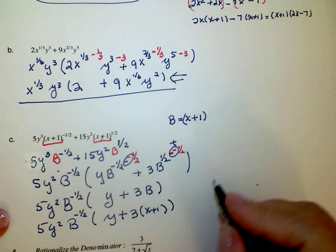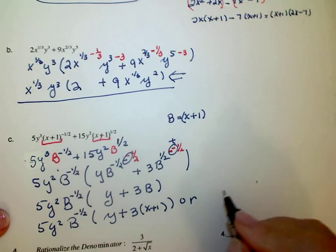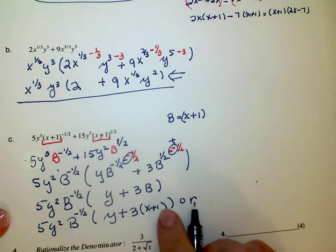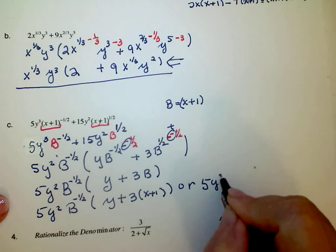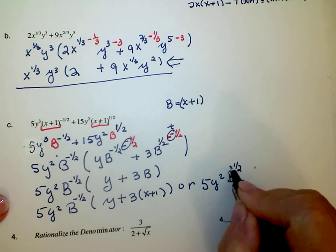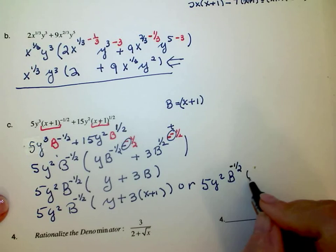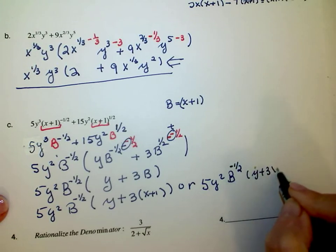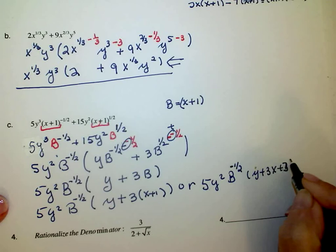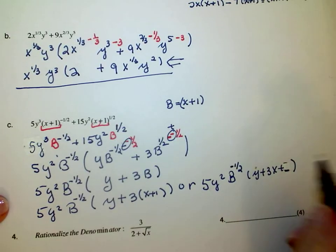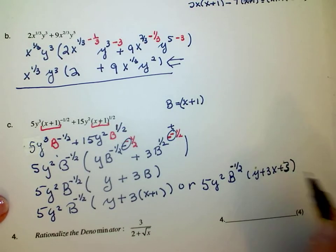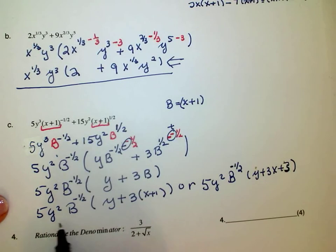b is x plus one. Now that's a perfectly good answer, or you could have multiplied this through. So you would have had 5y squared b to the negative one-half times y plus 3x plus three, either way. So either one of these could be answers.